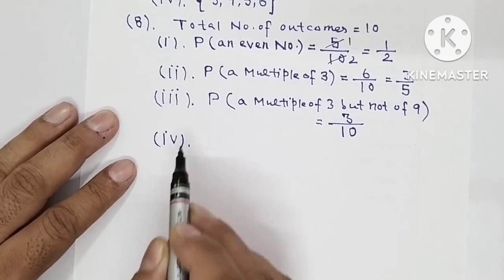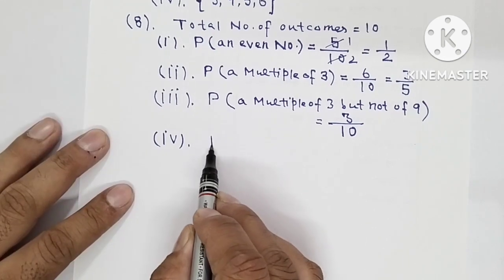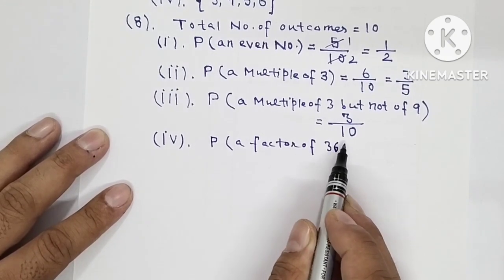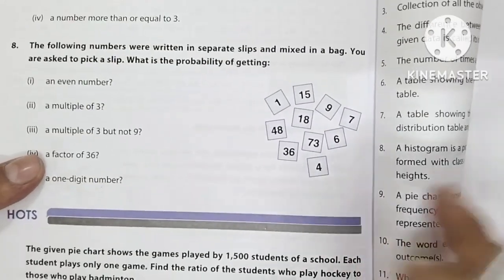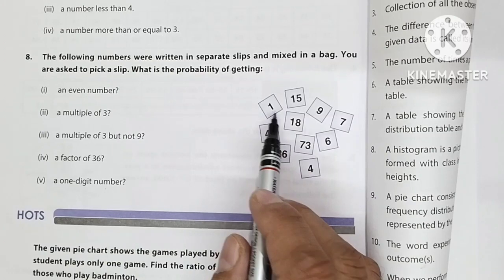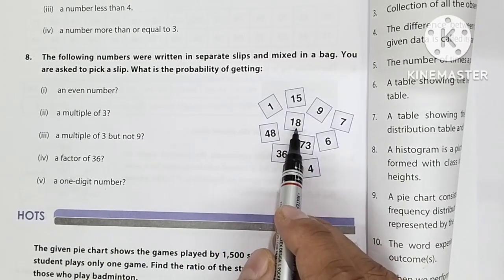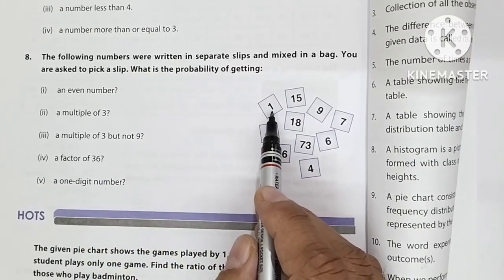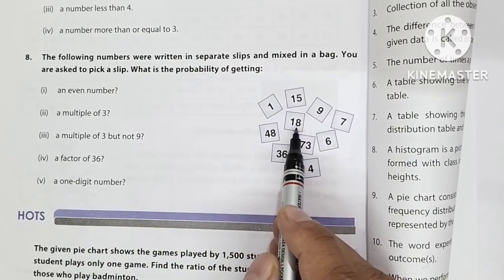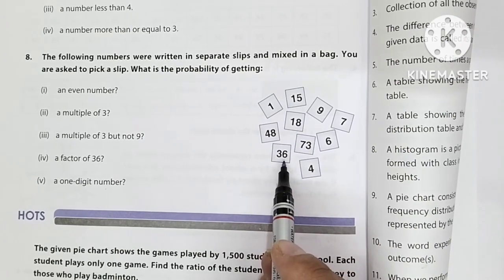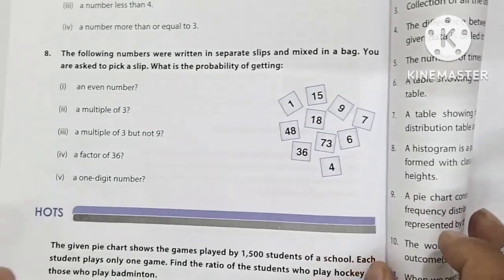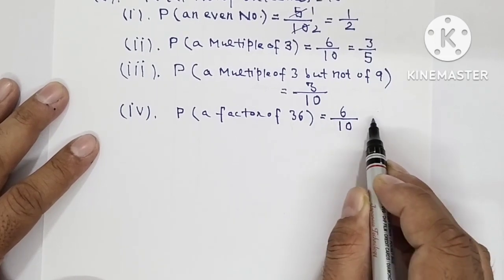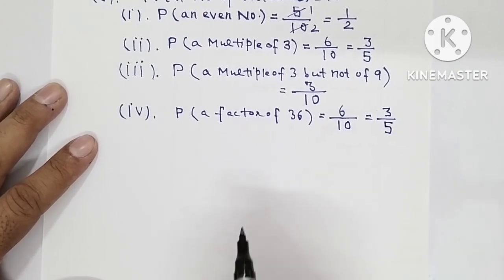Part number 4 — probability of a factor of 36. The factors of 36 among the slips are: 1, 9, 18, 6, 36, and 4 — that is 6 factors. So the probability is 6 over 10, which simplifies to 3 over 5.